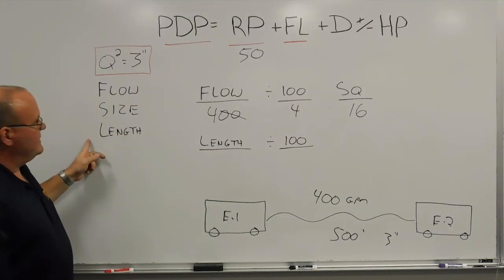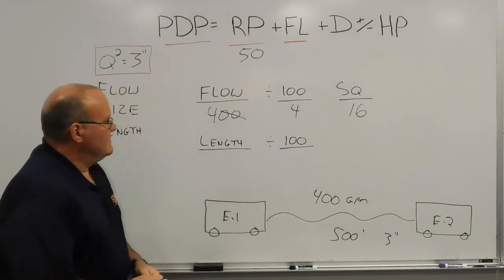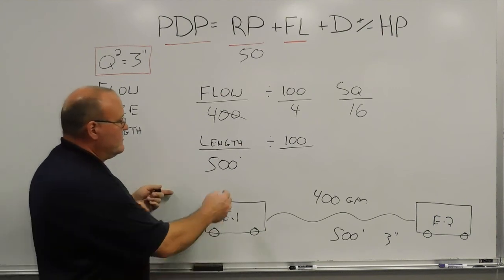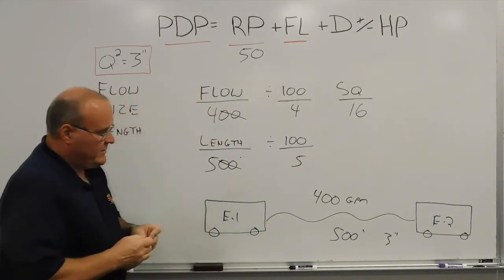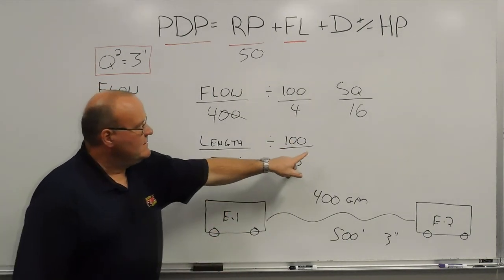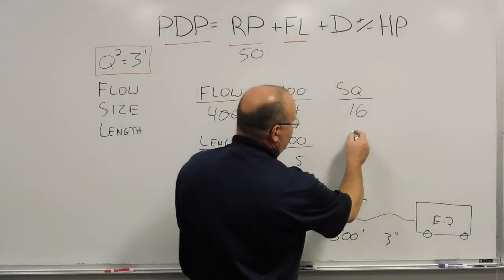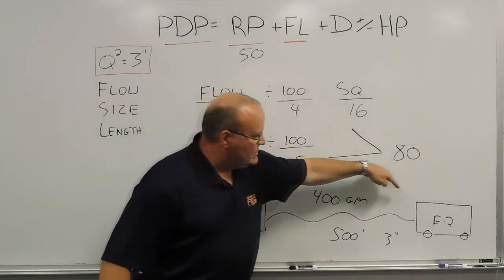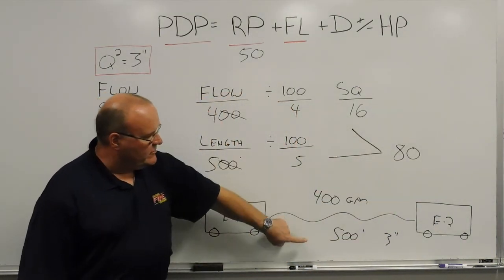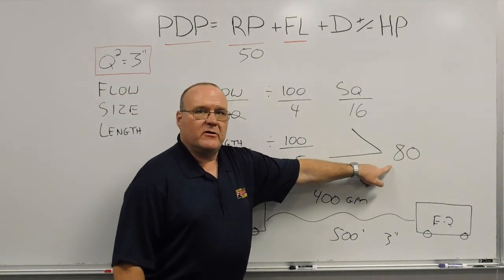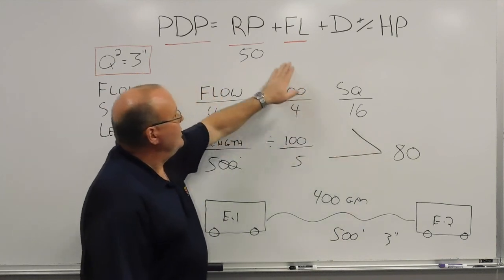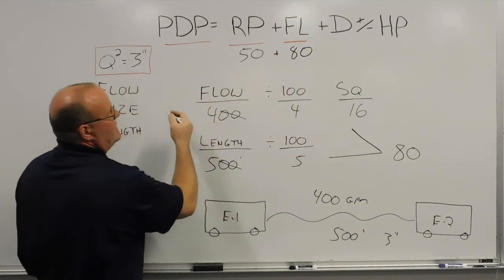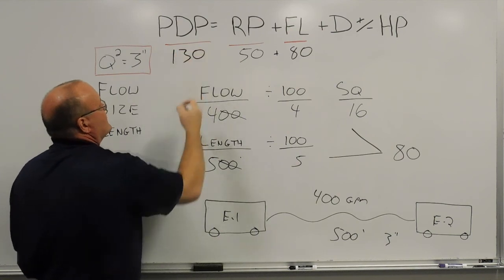Then we account for the length, which is 500 feet. We take that length and do the same thing: divide by 100, knocking the zeros off. That's five 100-foot sections of hose. We multiply that by our friction loss of 16, and we end up with 80 pounds of friction loss from engine 1 to engine 2. We plug that friction loss into our formula and add the two together, ending up with a pump discharge pressure of 130 pounds.